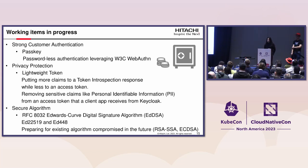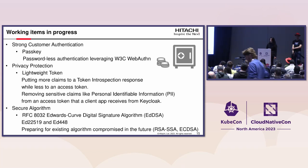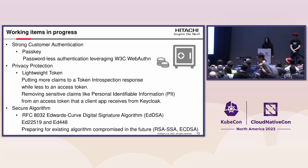First item is passkey — passwordless authentication that references W3C WebAuthn features that Keycloak already supported. Second working item is lightweight token. As you may know, the access tokens that Keycloak issues include a lot of information, sometimes called self-contained tokens or assertion tokens. The access token includes an authenticated user's information, sometimes called personally identifiable information. This lightweight token allows Keycloak to remove this PII from an access token, so the client application that receives the access token cannot know this PII.